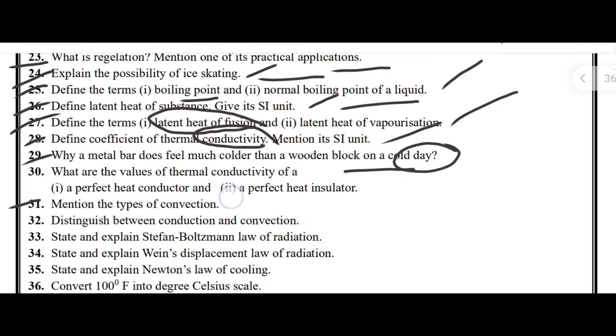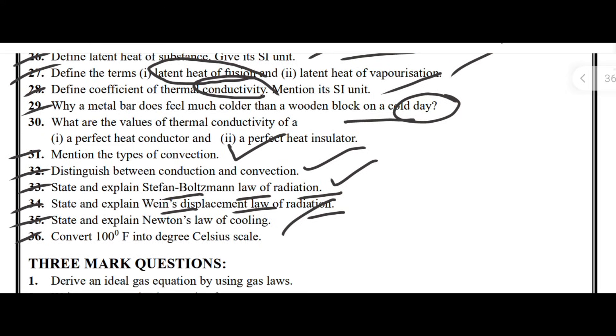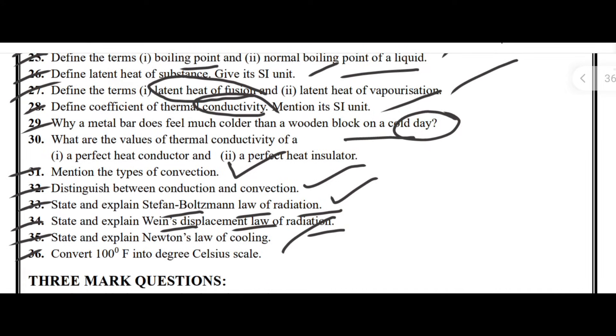Mention the types of convection. Distinguish between conduction and convection. State and explain Stefan-Boltzmann law of radiation. State and explain Wien's displacement law of radiation. State and explain Newton's law of cooling. Convert 100 degree Fahrenheit into degree Celsius scale. These are all the possible two-mark type questions which are important for annual theory exam of first PUC physics subject.